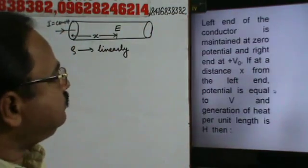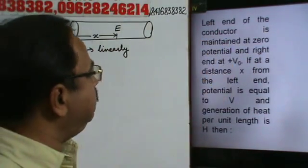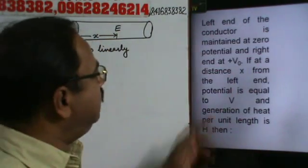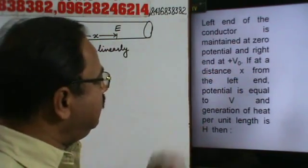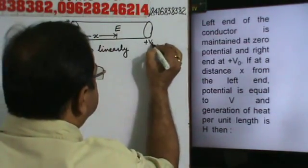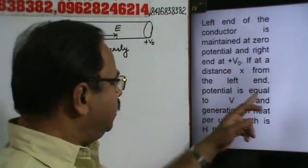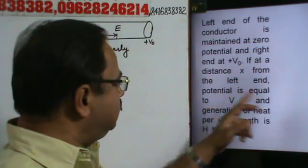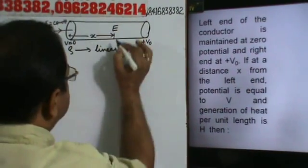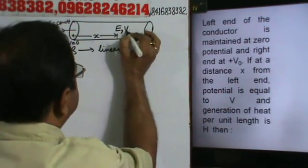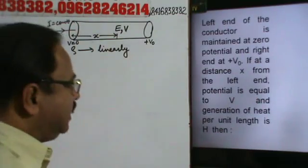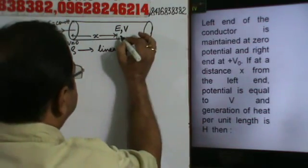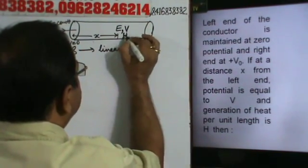The left end of the conductor is maintained at zero potential, and the right end is at plus V₀. The potential at distance x from the left end is equal to V, where the electric field is E. The heat generation per unit length is H.